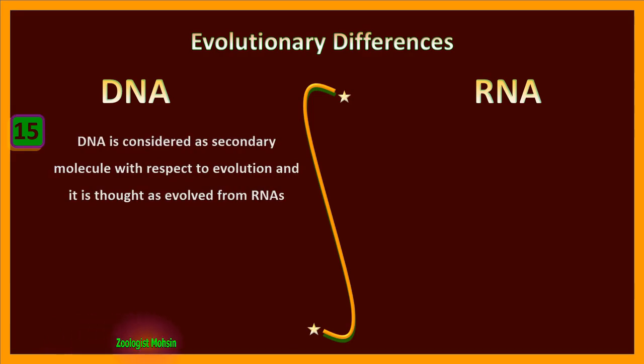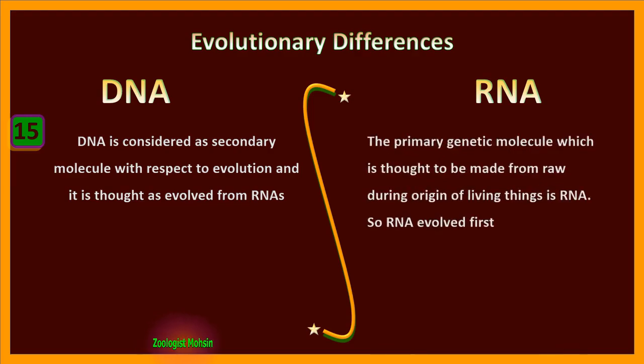Evolutionary differences. DNA is considered as secondary molecule with respect to evolution and it is thought as evolved from RNAs, while the primary genetic molecule which is thought to be made from raw materials during origin of living things is RNA. So RNA evolved first.